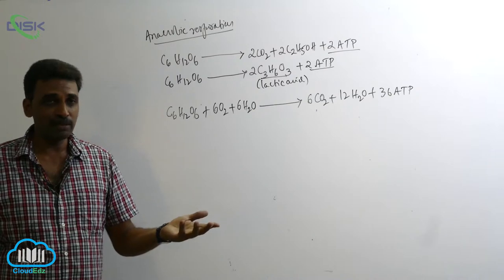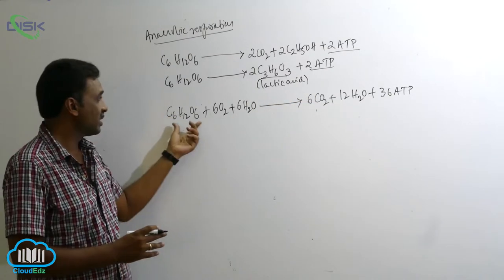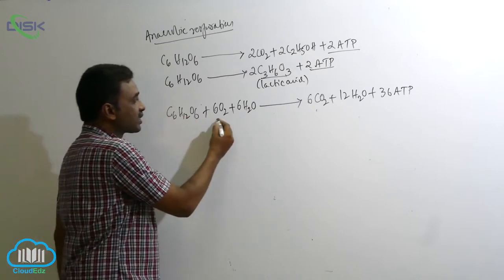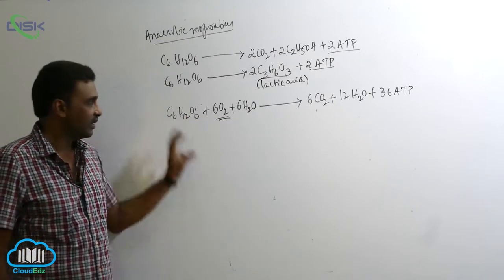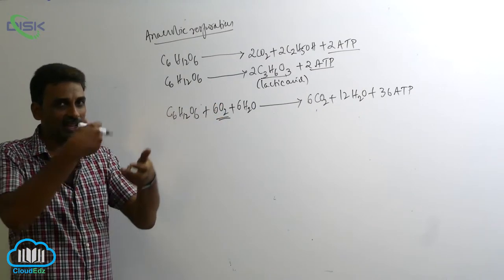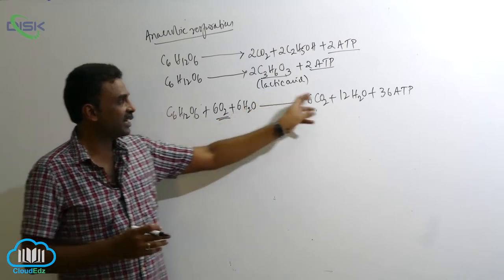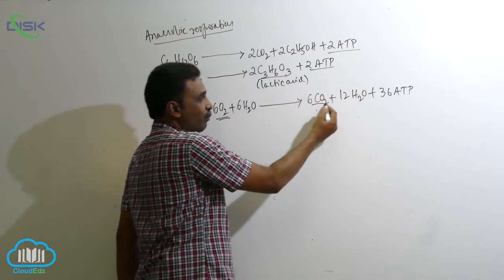Most of the plants, most of the animals, they go for aerobic respiration. Aerobic respiration means the energy source is oxidized. So the glucose, in the presence of oxygen, is broken down. When it is oxidized, it is broken down into carbon dioxide and water.